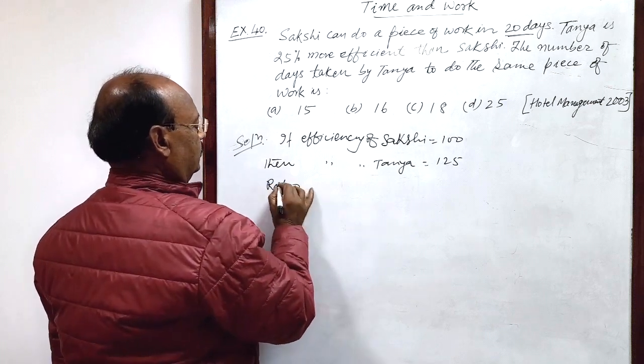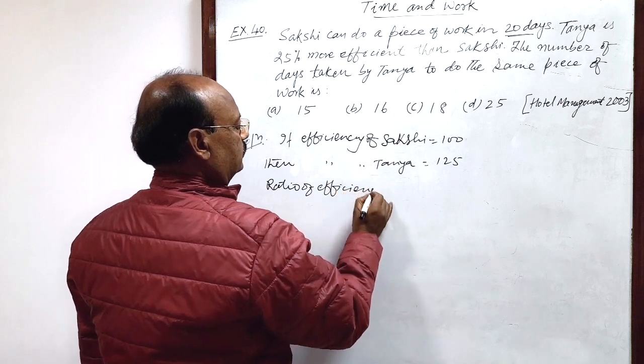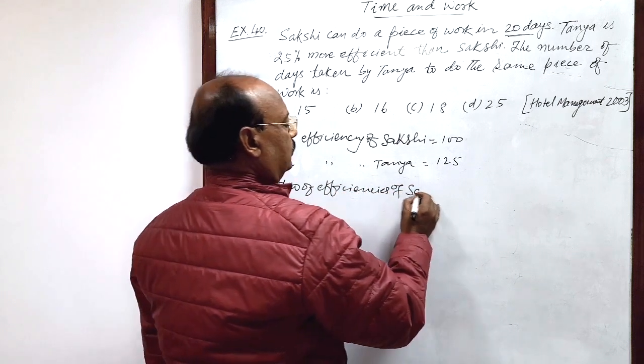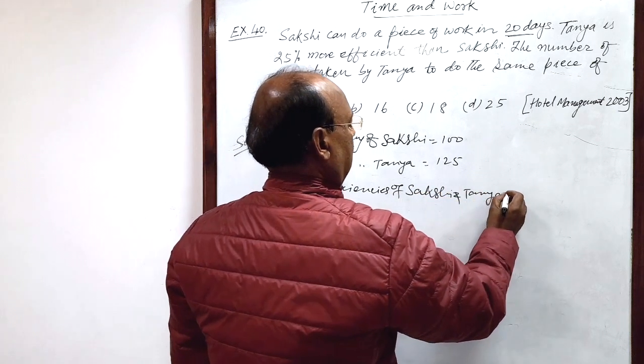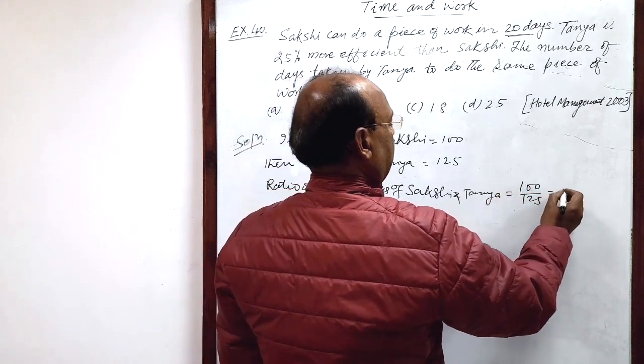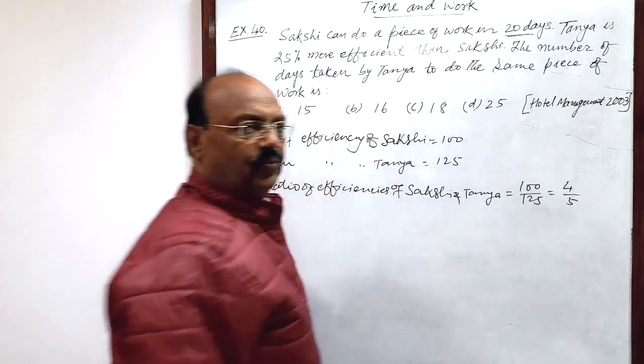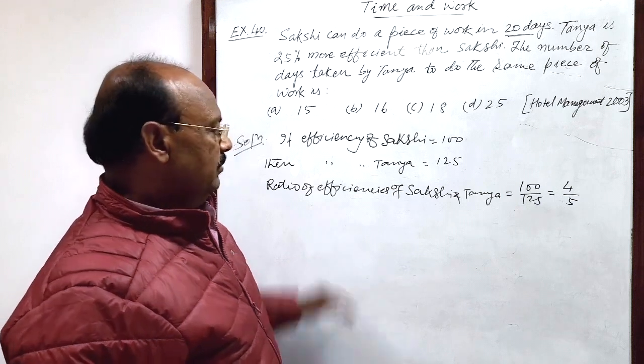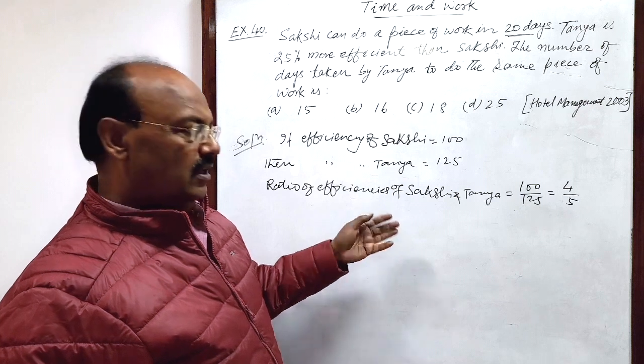So ratio of efficiencies of Sakshi and Tanya is equal to 100 by 125, that is 4 by 5. And this is very interesting to note, that if efficiency is more, number of days required will be less.